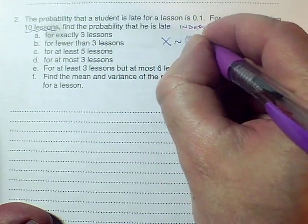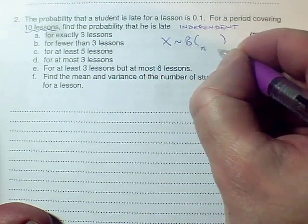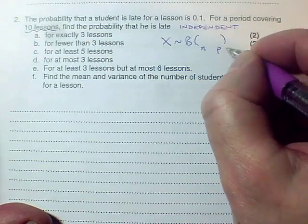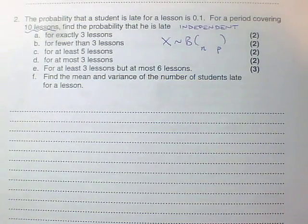So X is going to be distributed binomial. You need to work out the values of n and p. n is the number of trials, p is the probability that he's late on any particular lesson.